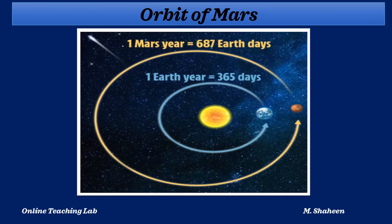Now look at the orbits of Mars and Earth. We see one Earth year is 365 days, while one Mars year is 687 Earth days, not the days of Mars.